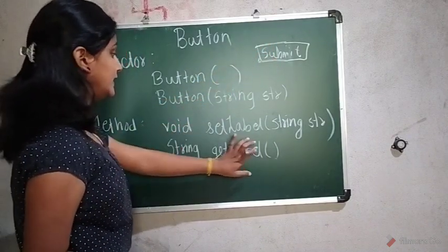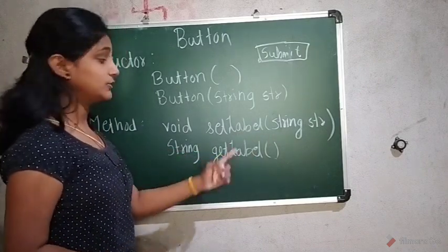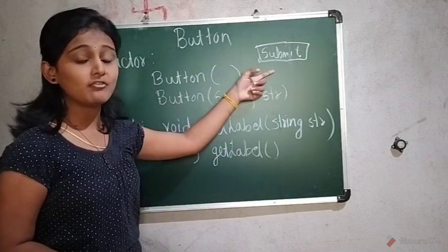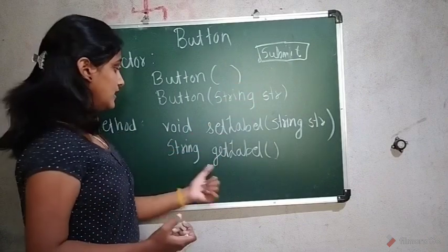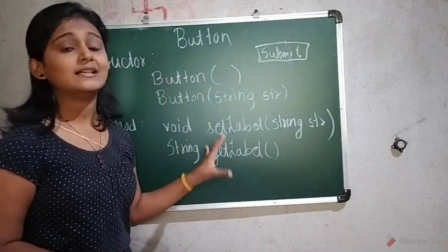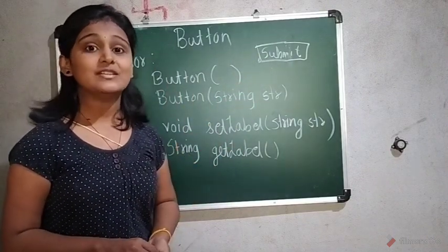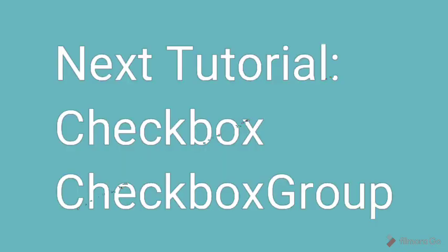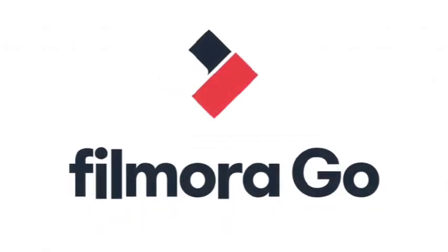Now the second one is string getLabel. Return type is string. So here what exactly is the name of my button, it will return here string. So this is regarding the button. Now next we will see a checkbox.